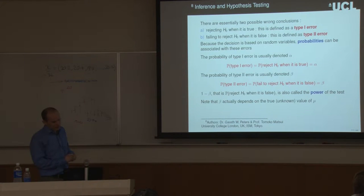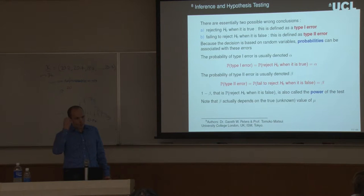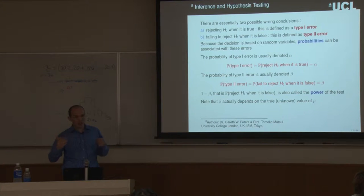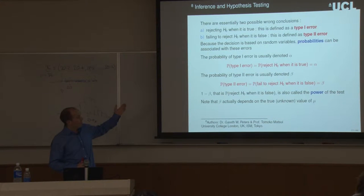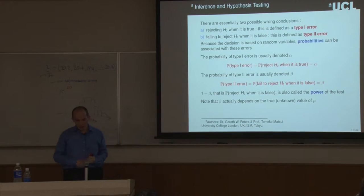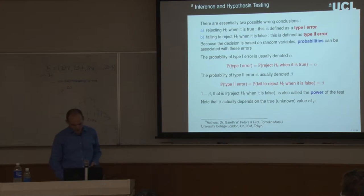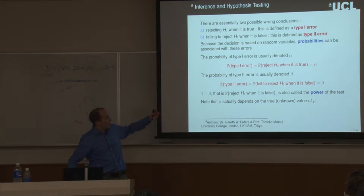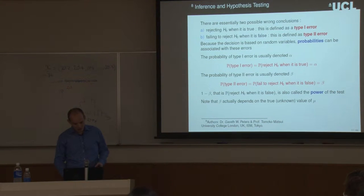We also discussed errors: type one error is rejecting the null hypothesis when it's actually true, and type two error is failing to reject H-naught when it's false. The probabilities alpha and beta are assigned to these respectively. The power of a test is one minus beta — rejecting H-naught when it's false — and if a test is powerful, we expect this to be close to one.